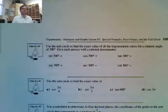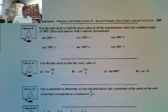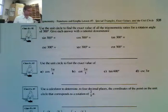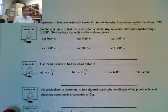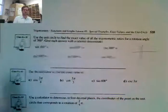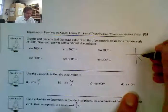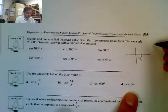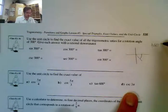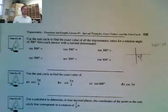Now we're going to look at some questions. Question 3 says: use the unit circle to find the exact value of all trigonometric ratios for the rotation of 300°. So first, 300° is going to be in quadrant 4. My reference angle is 360 − 300 = 60°.